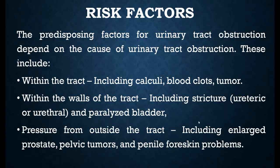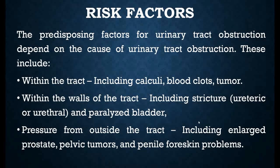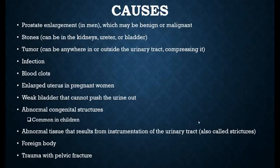Risk factors — predisposing factors for urinary tract obstruction include: within the tract, such as kidney stones, urinary bladder stones, or ureter stones, along with blood clots or tumors. Within the wall of the tract, there may be strictures from surgery or other conditions, or when the bladder is paralyzed. Pressure from outside the tract may include prostate enlargement, prostate cancer, pelvic tumors, or penile foreskin problems in small children.